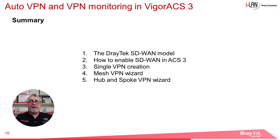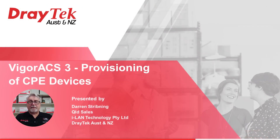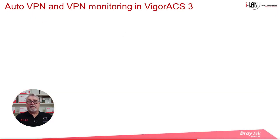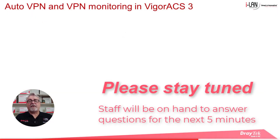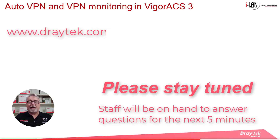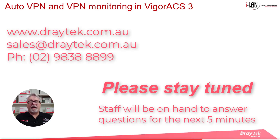Who knew VPNs could be so easy? To summarise, we looked at SD-WAN and how to create VPNs using ACS3, including the additional SD-WAN monitoring features available in hub and spoke and mesh VPNs created using the SD-WAN VPN wizard. In our next webinar we'll be looking at provisioning of CPE devices using VigorACS3. For more information about Draytek products, visit www.draytek.com.au, email sales@draytek.com.au, or call 02 9838 8889. Please like, subscribe, and click the bell for notifications. Thanks and bye for now.